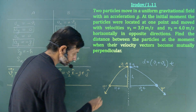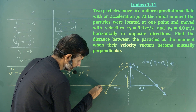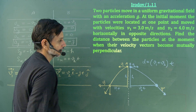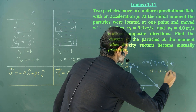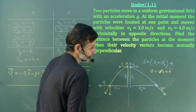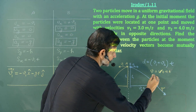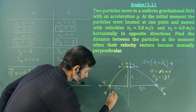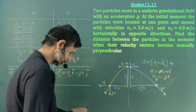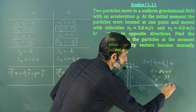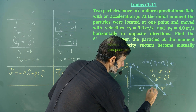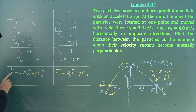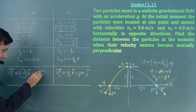The horizontal velocity of particle A remains v1 throughout. The vertical velocity at time t is given by v = u + at: since the initial vertical velocity is 0 and acceleration is minus g, the vertical component is minus gt, so its magnitude is gt. Similarly for particle B, the horizontal component remains v2 and the vertical component is gt downward.